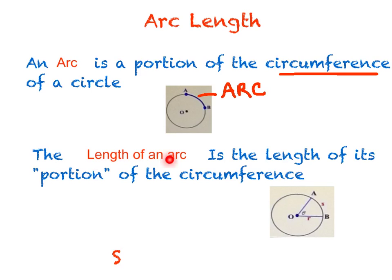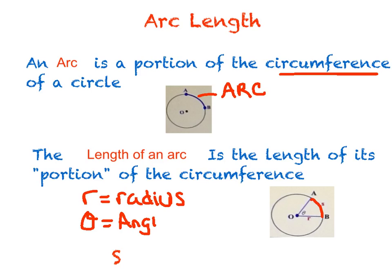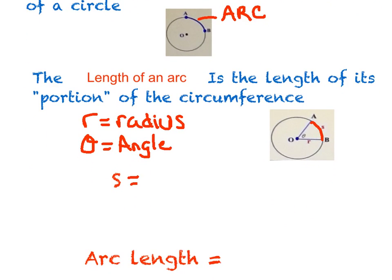The length of an arc is the length of its portion of the circumference. If we ask you to find the length of the arc — highlighted in red — we're asking how long that is. I've labeled a few things: r stands for radius, theta is your angle, and s is our new one today — s represents arc length.